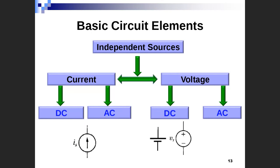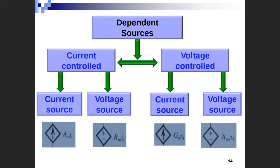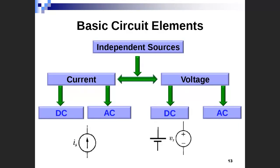Next, we need to know some basic sources: independent sources and dependent sources. From its name, an independent source means that its value does not depend on any other source. Generally, I can have a current source or a voltage source. When a current source is called independent, its value will be an explicit value such as 1, 2, 3, 10, or 20, or any other specific number.